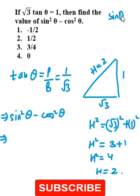sin θ is dependent on P over H. And cos θ is dependent on B over H. So put the value,